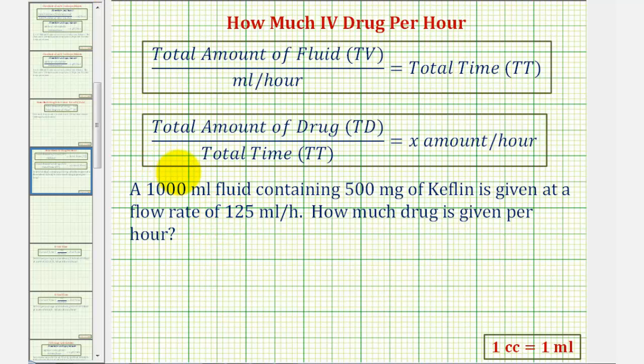Our ultimate goal here is to determine the amount of drug in milligrams that is given per hour. To do this, we have to take the total amount of drug and divide by the total time. But notice we're not given the total time. So before we can determine how much drug is given per hour, we have to find the total time by taking the total amount of fluid in milliliters and dividing by the flow rate in milliliters per hour. So we'll first find the total time, and then we'll find the amount per hour.